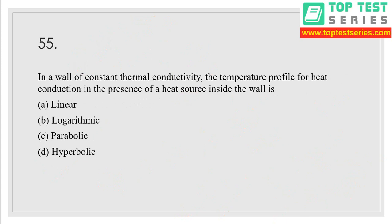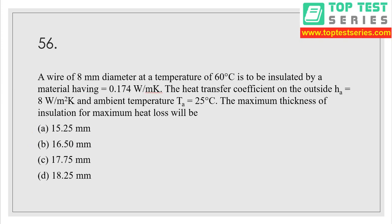Question number 55: in a wall of constant thermal conductivity, the temperature profile for heat conduction in the presence of a heat source inside the wall is parabolic — option C is the correct answer. For reference: for a slab, temperature distribution is linear; for a cylinder, it is logarithmic; for a sphere, it is hyperbolic.